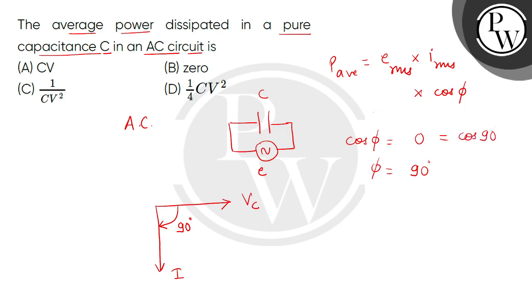So the average power dissipated is zero. The correct option is B, zero. Thank you.